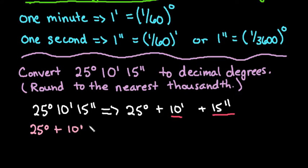So to cancel out our minutes, we are going to multiply the top part of the fraction as 1/60th degrees over 1 minute.